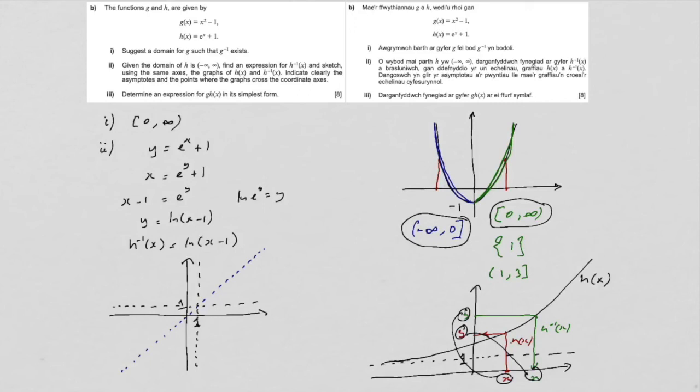And then we can see that the H of x goes along here, crossing at two. And the inverse is a nice reflection, also crossing at two on the x-axis. And we should label them, of course. So that's H of x, and that's H to the minus one of x.